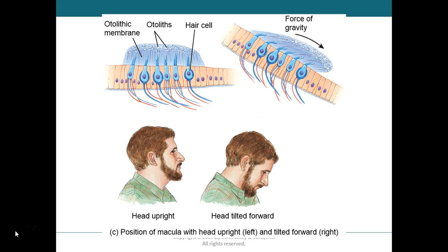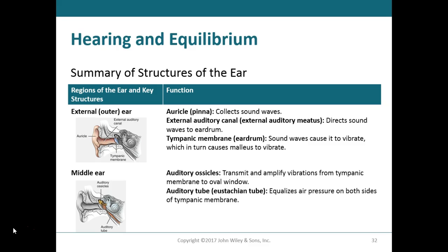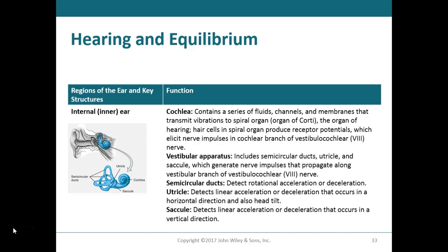To summarize: the external ear consists of the auricle, external auditory canal, and tympanic membrane, which together funnel and transmit sound. The middle ear includes the auditory ossicles — malleus, incus, and stapes — which transmit and amplify vibrations from the tympanic membrane to the oval window, with the auditory tube equalizing pressure. The inner ear contains the cochlea, which processes hearing through a series of channels, fluids, and membranes that transmit vibrations deeper into the cochlea toward the organ of Corti.